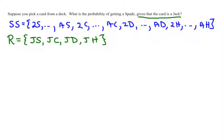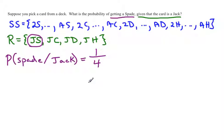Out of this restricted sample space, we want to find the probability that the card is a spade. We're looking for the probability of a spade given that the card is a jack. In this restricted sample space, there is one spade, so the probability would be one out of four outcomes. Your probability is 1/4.